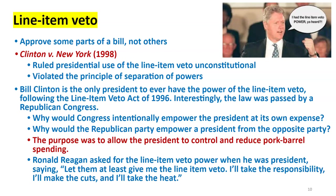Presidents have clamored for the line item veto for a long time. A line item veto means instead of vetoing a whole bill, the president vetoes only the lines or paragraphs they don't like. Reagan wanted it, George H.W. Bush wanted it, then Bill Clinton said as governor of Arkansas he had line item veto power and it worked effectively. Congress gave it to him. The city of New York sued the Clinton administration, and in Clinton v. City of New York (1998), the Supreme Court declared it unconstitutional.